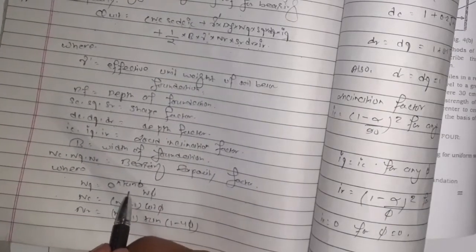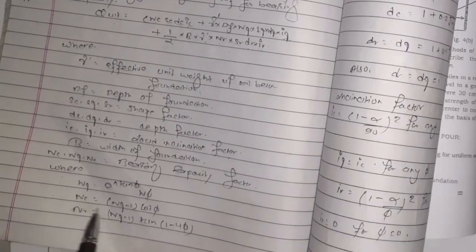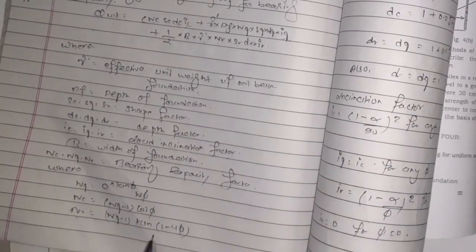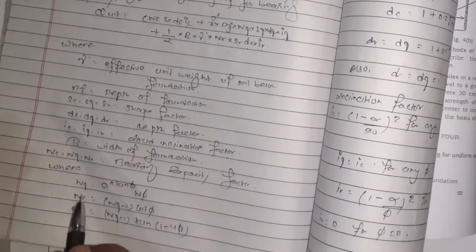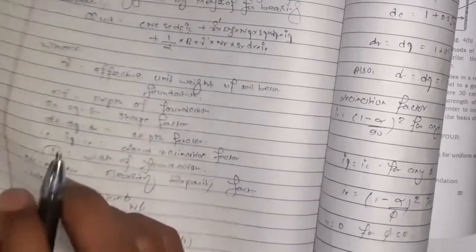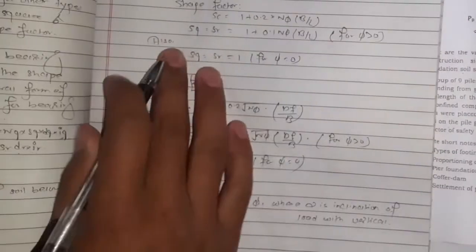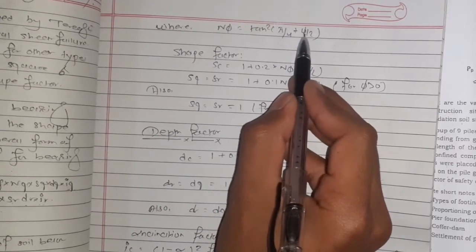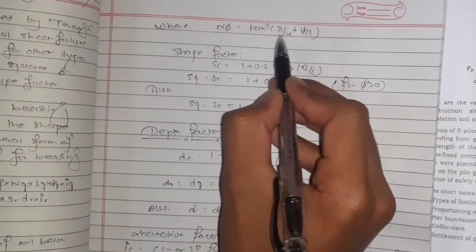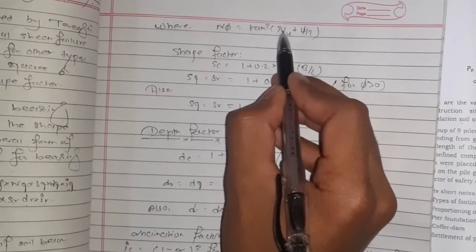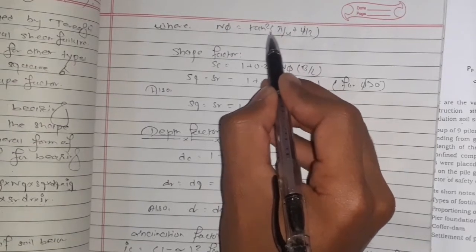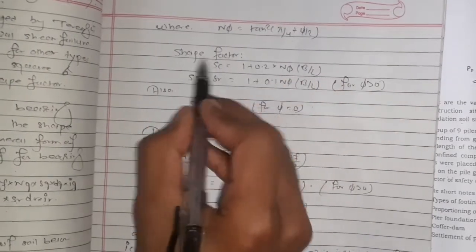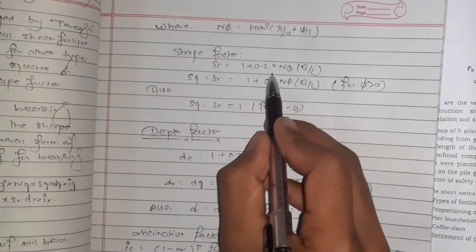For bearing capacity factors: Nq = e^(π·tanφ)·tan²(45 + φ/2), Nc = (Nq - 1)·cotφ, Nγ = (Nq - 1)·tan(1.4φ). The formula for Nφ is tan²(π/4 + φ/2). For shape factors: sc = 1 + 0.2·√Nφ·B/L, sq = 1 + 0.1·Nφ·B/L for φ > 0, and sq = 1 for φ = 0.